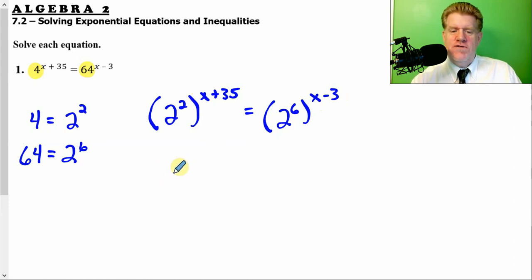That being said, what do we do now? Now I'm going to rewrite this. So, instead of 4 to the x plus 35 power, we're going to write 2 squared to the x plus 35 power. Instead of 64, we're going to write 2 to the 6th to the x minus 3 power. Why is this important? What does it do? Well, you might be able to see it already. When you raise a power to a power, what do you do with those two powers? Yeah. You multiply them. So, 2 times x, 2 times 35.